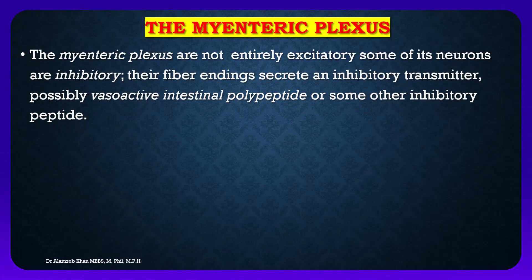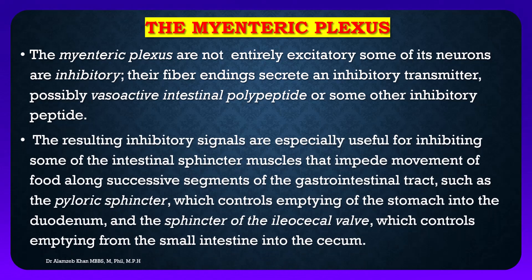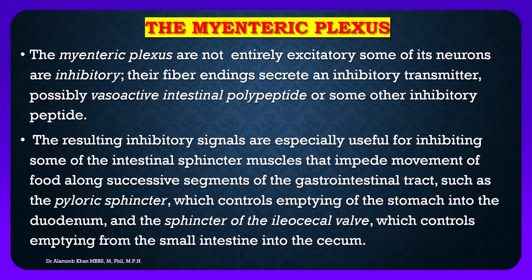The myenteric plexus is not entirely excitatory — some of its neurons are inhibitory, and their fiber endings secrete an inhibitory transmitter, possibly vasoactive intestinal peptide or some other inhibitory peptides. These inhibitory signals are especially useful for inhibiting some of the intestinal sphincter muscles, such as the pyloric sphincter, which controls emptying of the stomach into the duodenum, and the ileocecal valve sphincter, which controls emptying from the small intestine into the cecum.